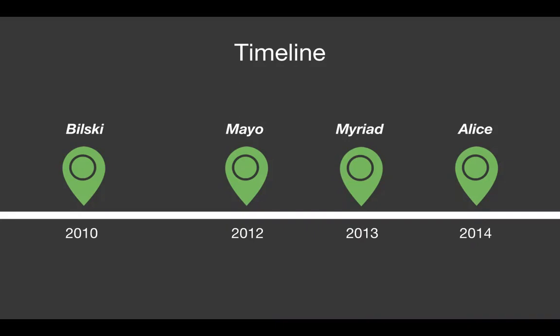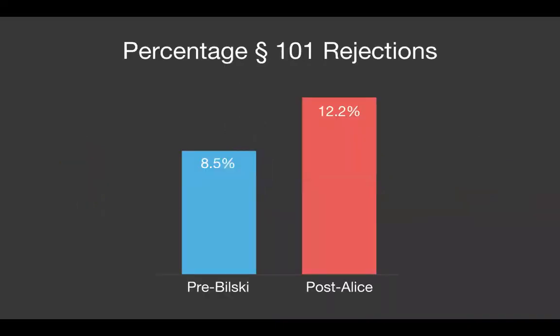So that's what people say — but is that really true? There's definitely a bit of truth to it when looking at the concentration of 101 rejections issued across the USPTO. Before Bilski, 101 rejections only made up about 8.5% of all rejections issued at the USPTO, making it the least frequently cited rejection basis. After Alice, that percentage jumped to 12.2%, now making 101 rejections the second least frequently cited rejection basis after 112A. That's a 44% increase — quite a big impact from four cases in the span of four years. Going forward, we'll show pre-Bilski numbers and then post-Alice numbers to compare what was going on before and after this recent string of 101 jurisprudence.